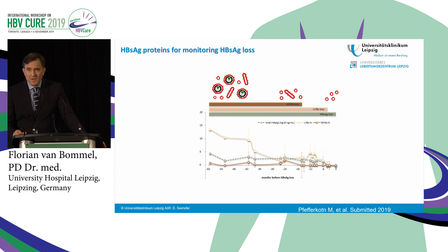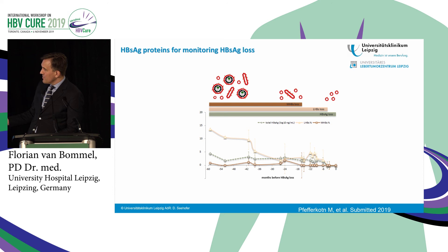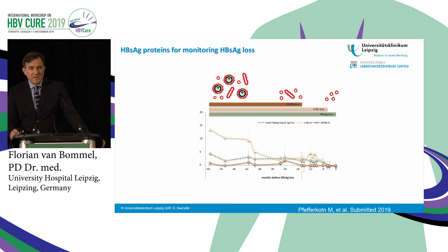Another marker worth highlighting, though not part of my main topic, is the composition of S antigen — L, M, and S forms. During treatment in patients who lose S antigen, there is a very strong decrease of L and M, with a very late decrease of the large S. This marker may be a very promising approach, and a commercial assay from Abbott will be presented during the AASLD meeting.